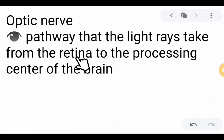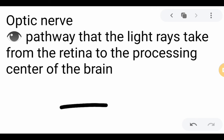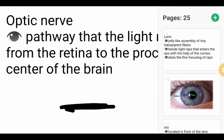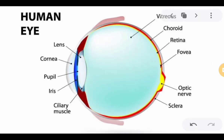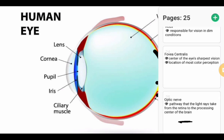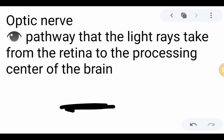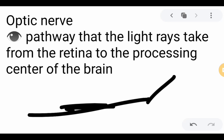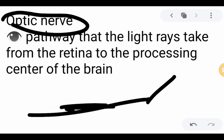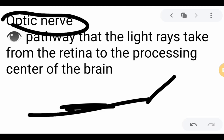Finally, the optic nerve is the pathway that light rays take from the retina to the processing center of the brain. From the retina, the optic nerve connects to the brain — that is how light rays are translated into electrical signals, which are then delivered to the brain through the optic nerve to form a visual image. That is all for the parts of the human eye and its functions.